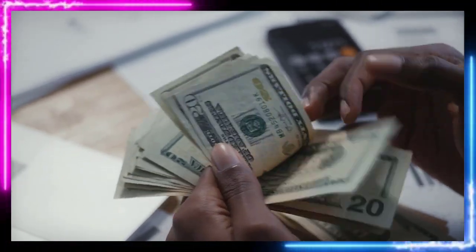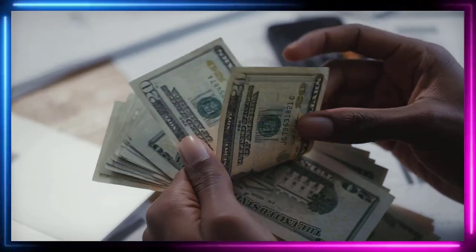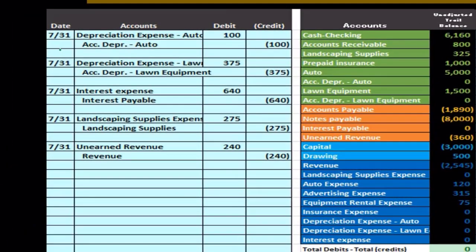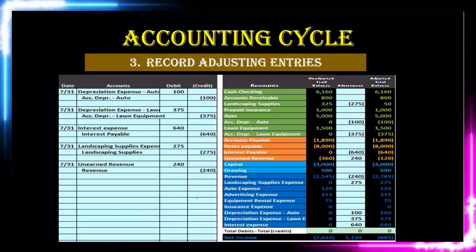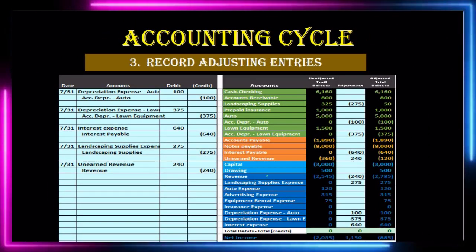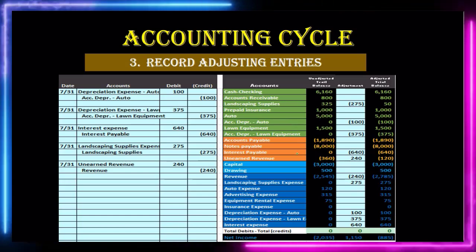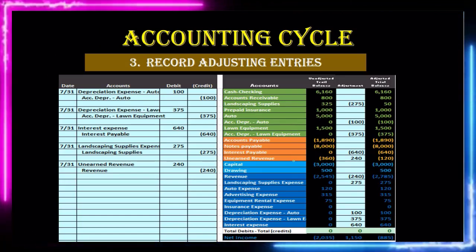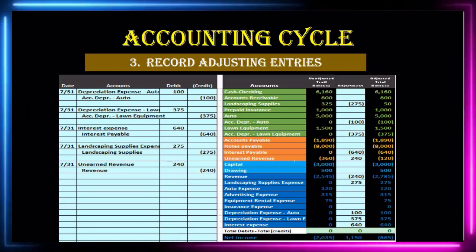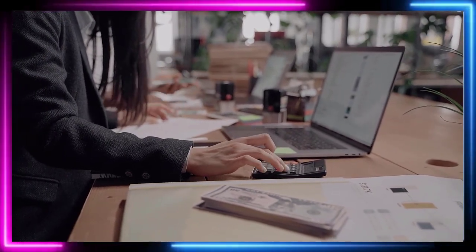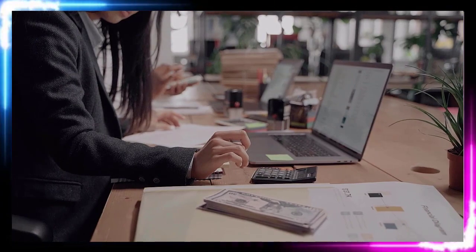Then we move to the adjusting entries, which are made as of the end of the month — in this case, 7/31. All of them are made as of the end of the month. These are our timing journal entries, making sure our financial statements are correct on an accrual basis, looking at those accounts that always need adjustment — accounts like prepaid insurance, accumulated depreciation, interest payable, and unearned revenue. Those accounts that typically need some type of adjustment, and that's just the way the system is built.